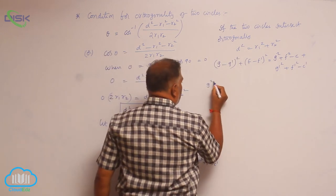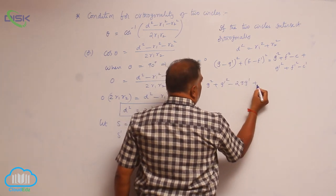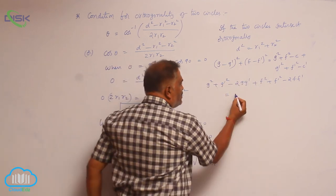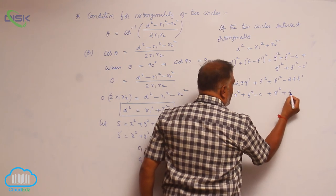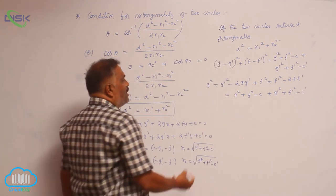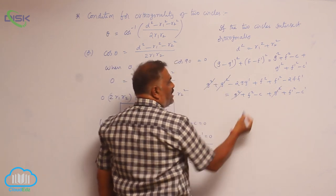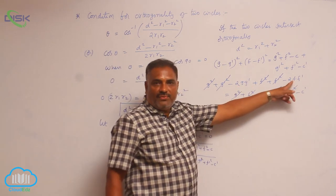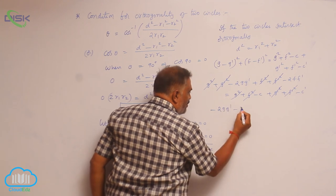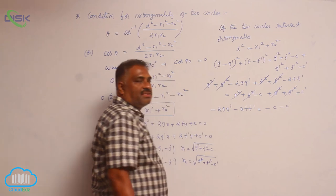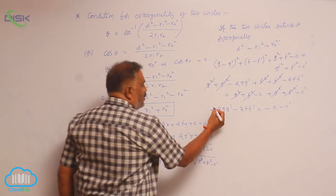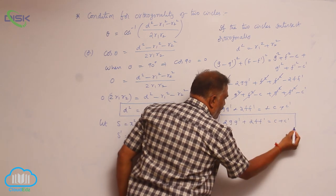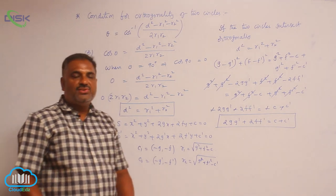Simplifying, g squared plus g' squared minus 2gg' plus f squared plus f' squared minus 2ff' equals g squared plus g' squared plus f squared plus f' squared minus c minus c'. Now g squared cancels, g' squared cancels, f squared cancels, and f' squared cancels, leaving minus 2gg' minus 2ff' equals minus c minus c'. Cancelling the negative sign throughout, we get 2gg' plus 2ff' equals c plus c'. This is the result which proves the condition for two circles cutting each other orthogonally.